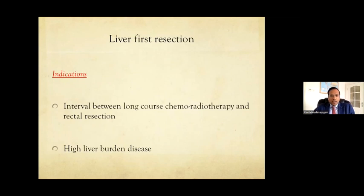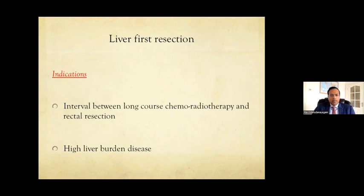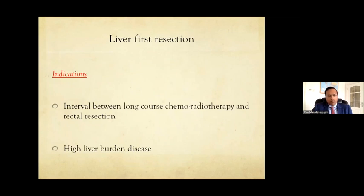Briefly on liver-first resection: there are essentially two accepted indications. First, following long-course chemo-rad in rectal cancer. Second, high liver burden disease — where liver disease will determine long-term survival, such as significant bilobar disease, a large tumor compromising the middle vein or involving the right lobe. In these situations, take the liver out first then the primary.